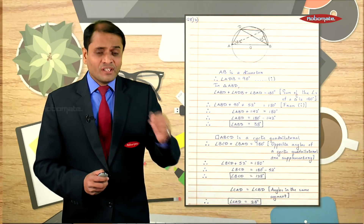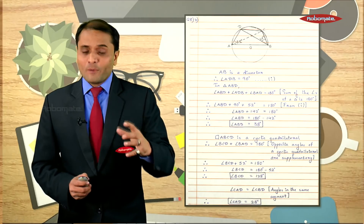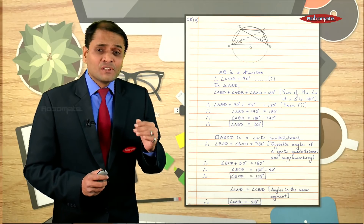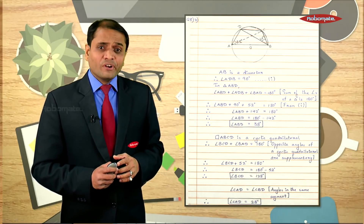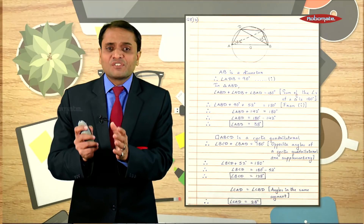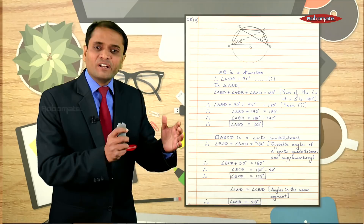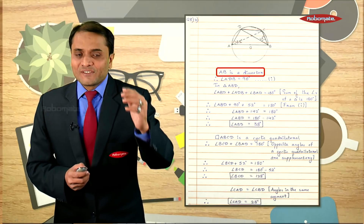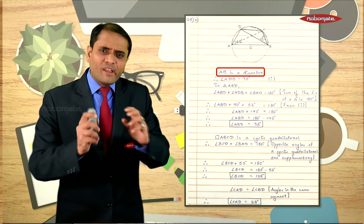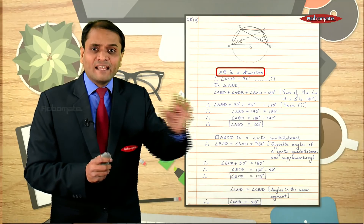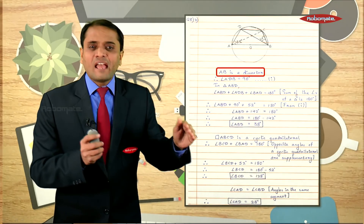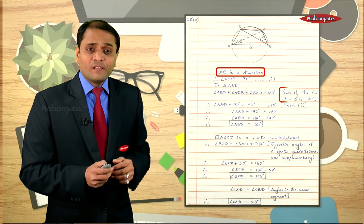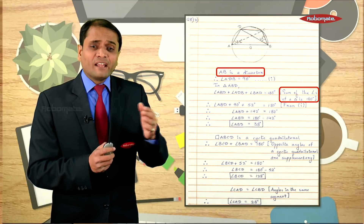In this sample we see important points for presenting a geometry sum. In geometry sums, it is very important to write reasons for the properties you use. Reasons can be written in two forms: in statement form, or inside brackets after the statement. For example, the first property applied is 'angle in a semicircle is a right angle,' and the reason given is 'AB is a diameter.' This reason is written in statement form.